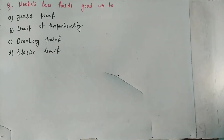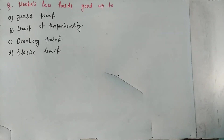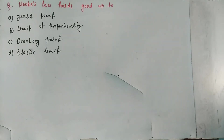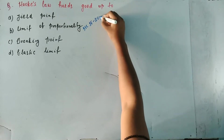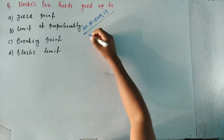Hello dears, we are studying JE MCQ and today's question is: Hooke's law holds good up to — options given: a) yield point, b) limit of proportionality, c) breaking point, and d) elastic limit. The question is asking up to which point Hooke's law holds good.